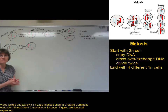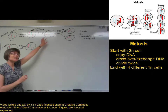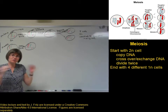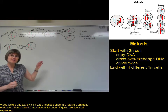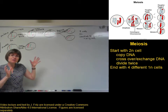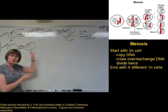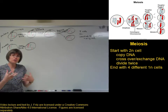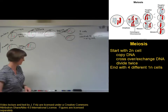The chromosomes are going to be pushed to the middle of the cell and line up just like they did in mitosis, with one important difference. In mitosis, the chromosomes lined up individually, all in a line. With meiosis, we're going to see that the homologous chromosomes remain associated with each other — the two long chromosomes remain associated with each other, and the short chromosomes remain associated with each other.